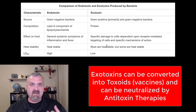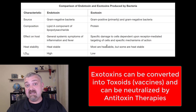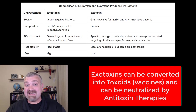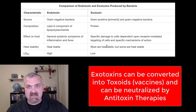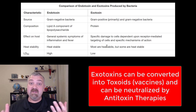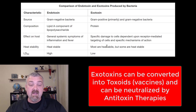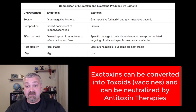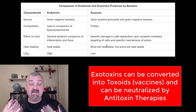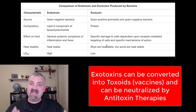Here's some good news about exotoxins: they can be converted into toxoids, meaning vaccines can be made against them, and exotoxins can also be neutralized by antitoxins. For example, if you get your tetanus shot, the toxoid protects you from the tetanus toxin, and you can also get a tetanus antitoxin if you get to it in time. So exotoxins have a lower lethal dose and can definitely be more dangerous, but thankfully we have vaccines and treatments.